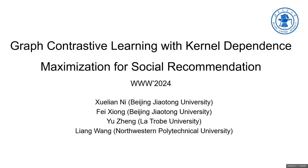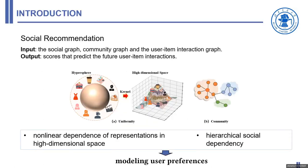Hello everyone, this is a presentation video about our paper Graph Contrastive Learning with Kernel Dependence Maximization for Social Recommendation. Social recommendation aims to leverage social relationships to predict future user-item interactions.